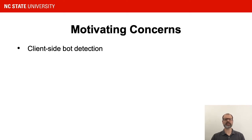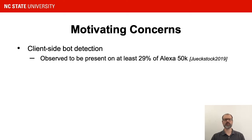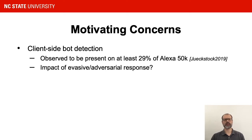Our motivating concerns began with client-side bot detection. In a previous web measurement work evaluating the visible v8 JavaScript instrumentation framework, we observed client-side bot detection to be present on at least 29 percent of the Alexa top 50k domains. The providers engaging in this behavior were setting themselves up to engage in evasive or adversarial responses that could skew measurement results, whatever their intentions, whether benign or adversarial.